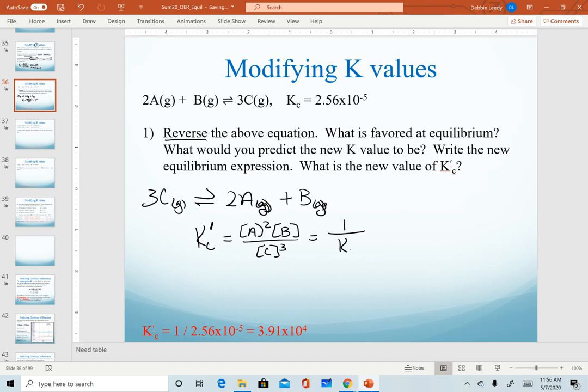What we should recognize is that this is exactly the inverse of our original Kc value. And so to get our new value, I take 1 divided by my original K value. Recognize that I would still have more A and B in my system at equilibrium. So now this is considered a product favored reaction. When we take the inverse, we get a value of 3.91 times 10 to the fourth. So this is a large K value, which matches our prediction of a product favored system.